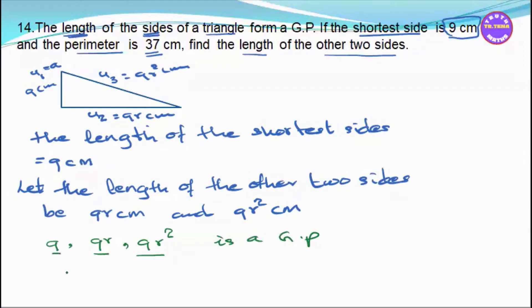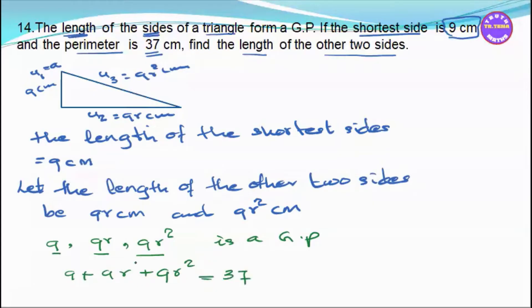Setting up the equation using the perimeter: 9 plus 9r plus 9r² equals 37. Rearranging, we get 9r² plus 9r plus 9 minus 37 equals 0, which gives us 9r² plus 9r minus 28 equals 0.